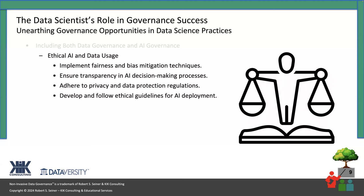Data quality was the first resonating theme. The second one is ethical AI and data use. We need to make certain that data scientists are well aware of the importance of implementing fairness and unbiased models and data. Implementing techniques to assure fairness and that data is not biased is something scientists need to get involved in. Ensuring transparency in the decision-making process coming out of the AI environment, and adhering to privacy and data regulations — all these things have to do with ethical AI and data usage. Data scientists are pretty much engaged in these things on a day-to-day basis, or at least they should be.